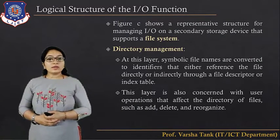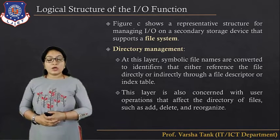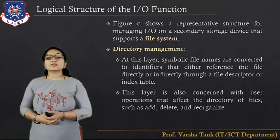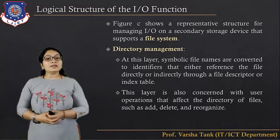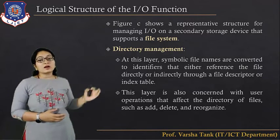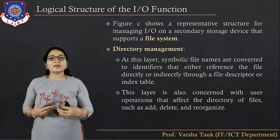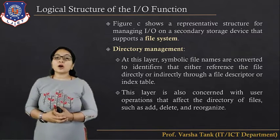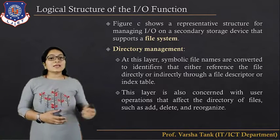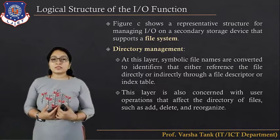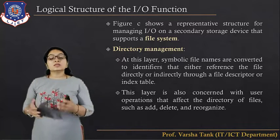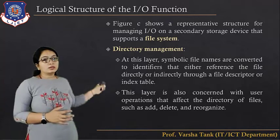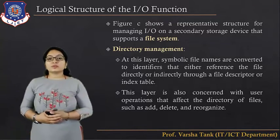The third type is the file system, figure C. The directory management layer converts symbolic file names into identifiers that reference the file directly or indirectly through a file descriptor or index table. This layer also handles user operations affecting the directory, such as add, delete, and rename.